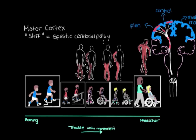That's our stiff, or spastic, type of cerebral palsy — and it's actually the most common type. The vast majority of people with cerebral palsy, about 70 to 80 percent, have one of these stiff types of cerebral palsy.